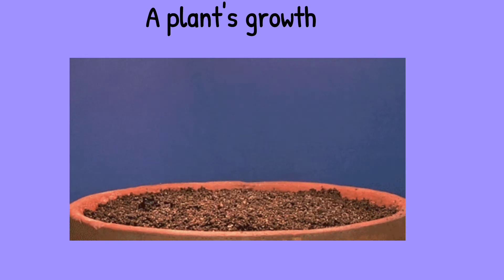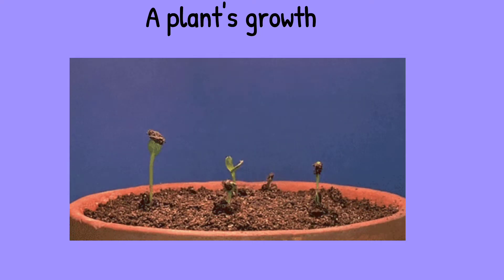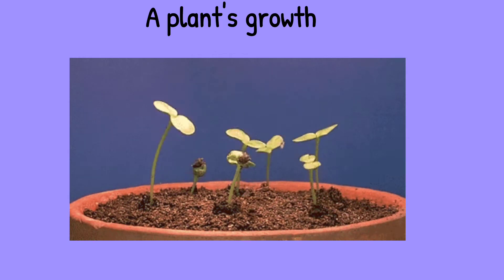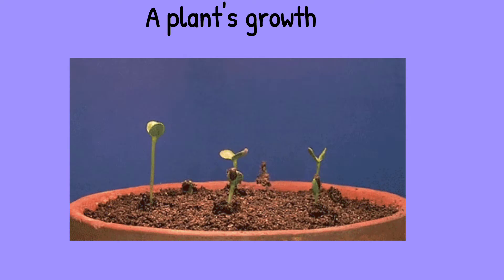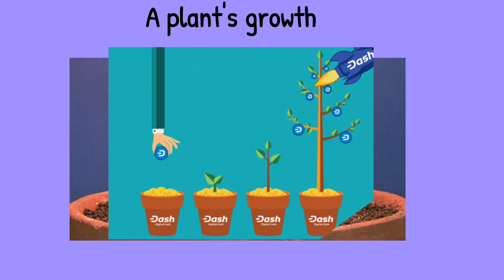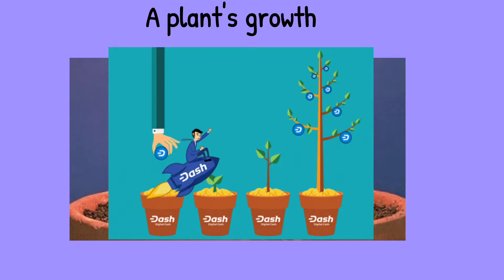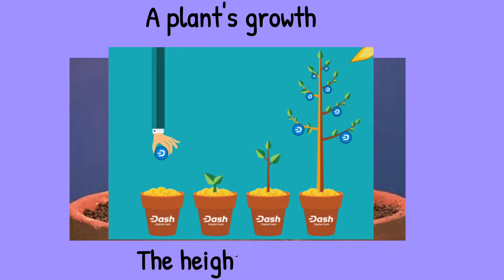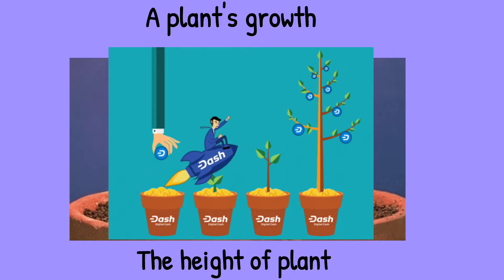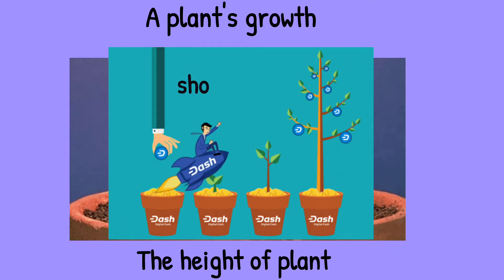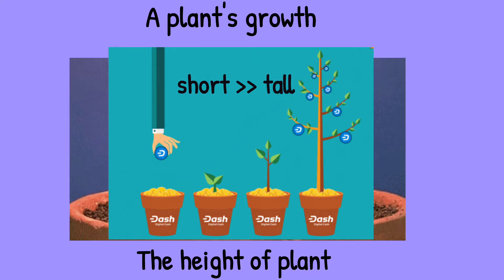What can you see here when plants grow? What are the changes? When a plant is growing, the first change is the height of the plant will increase. The plant gets taller — it changes from short to tall.